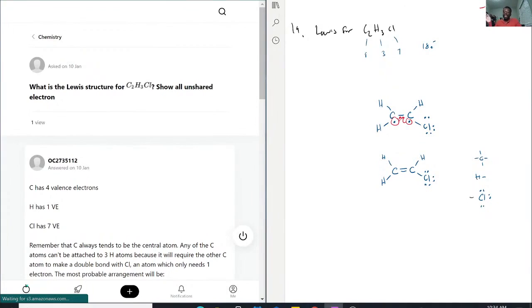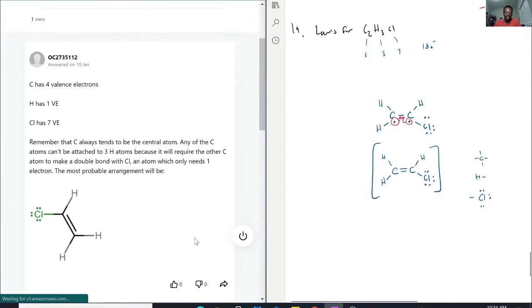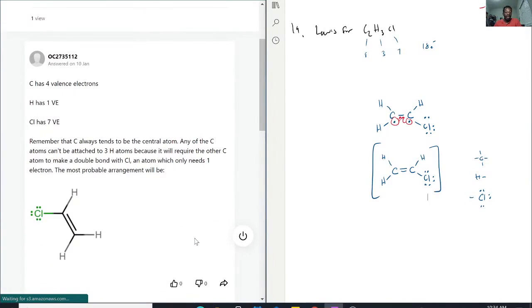With that being said, if you look at this, the Lewis structure for this is indeed going to be just that. And we are showing all the unshared electrons. They would all be on the chlorine. And so, that's what we're given. This is the Lewis structure.